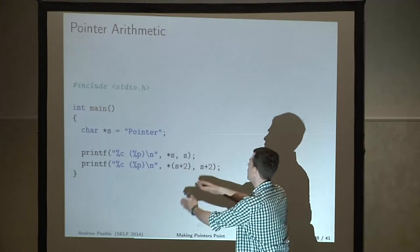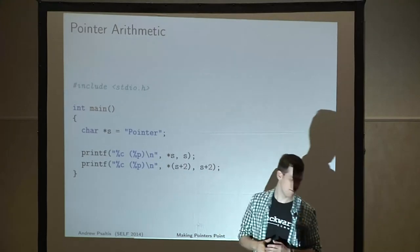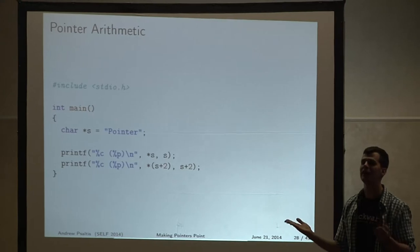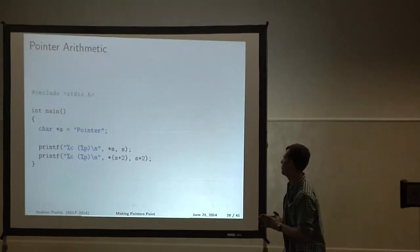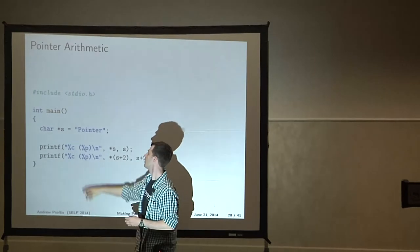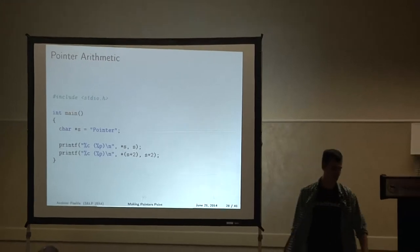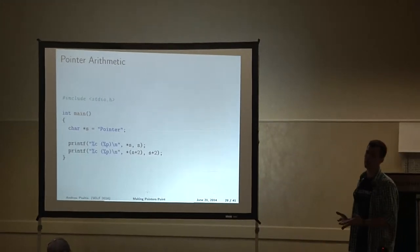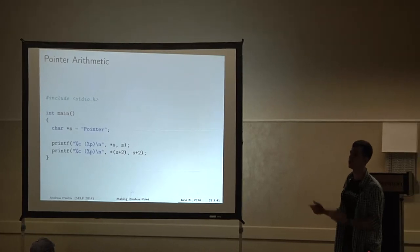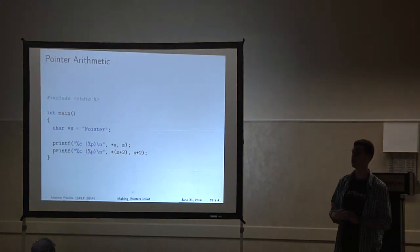When you do arithmetic with pointers, it will advance the pointer by the size of the value in question. So in this case it will go two elements forward in the string to the 'i' and print that out instead. If this was an integer array, instead of advancing just two bytes — since a character is one byte — it would advance eight bytes, since an integer in 32-bit land is four bytes.